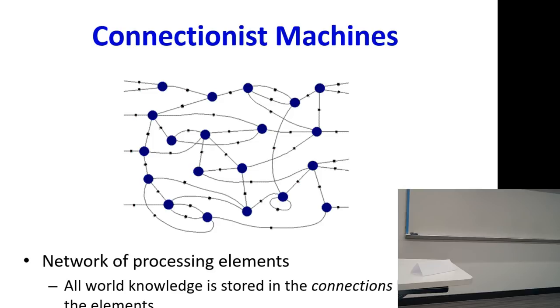This is the connectionist machine: you have a bunch of units, they're connected to one another in different ways, and all information about how it operates is stored in the connections. But then the units are also important — what are these individual elements?